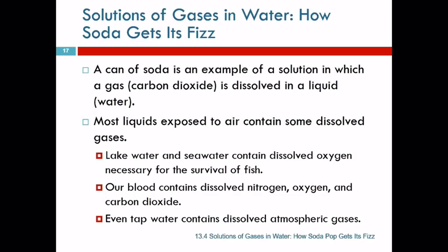In fact, one of the functions of our blood is to carry oxygen and carbon dioxide back and forth to our cell tissues. Even tap water has dissolved atmospheric gases, dissolved air in it.